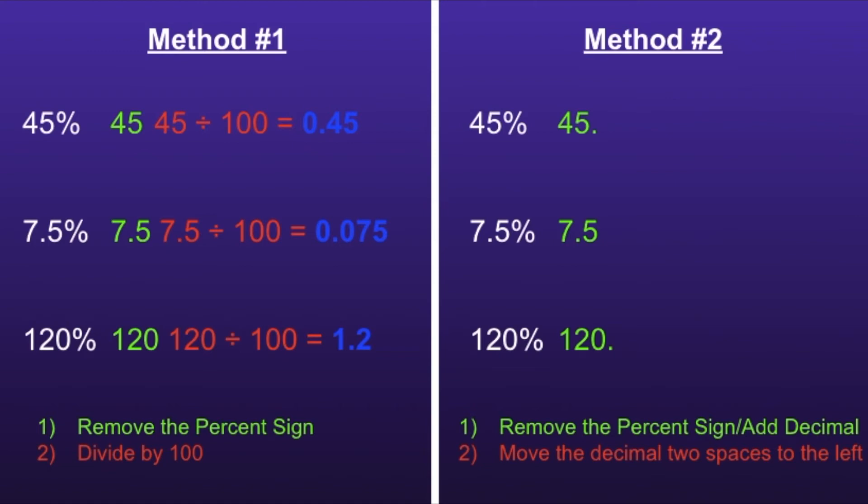Step number 2 is to move the decimal two spaces to the left. So when we move the decimal two spaces to the left on the first problem, we are left with 0.45.